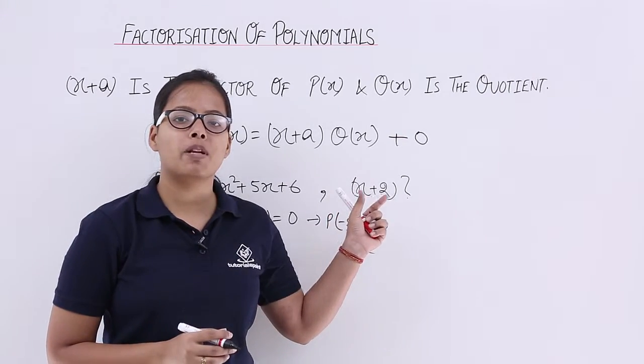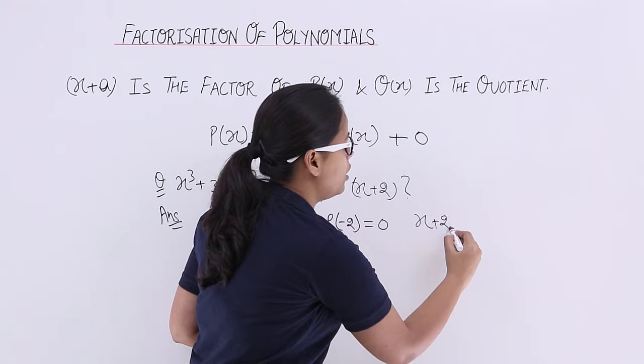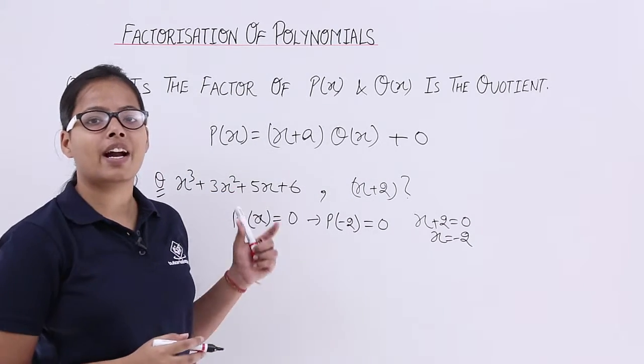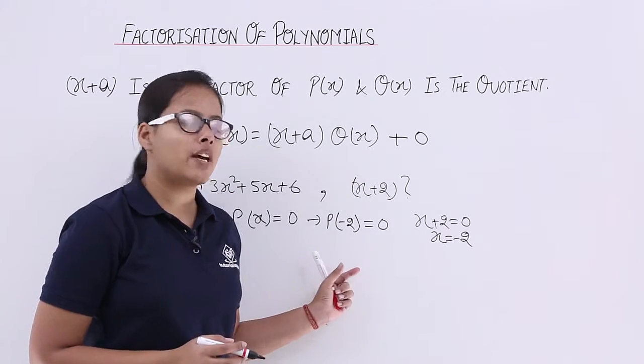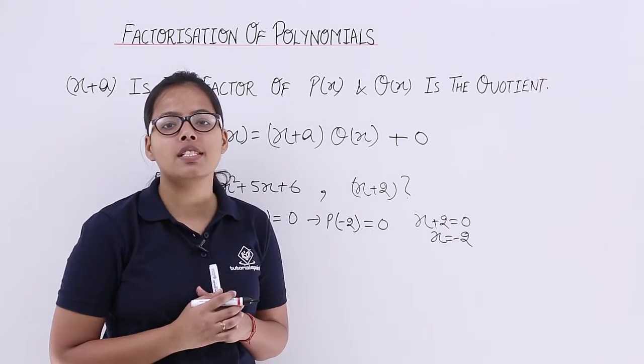As you can see here, x + 2 = 0, so x = -2. So -2 is the value to check. What you will do is substitute this value in this polynomial and see if it is coming out to be zero or not.